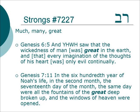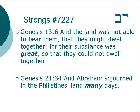Genesis 6:5 — And Yahweh saw that the wickedness of man was great in the earth, and that every imagination of the thoughts of his heart was only evil continually. This was the reason that he's going to bring the flood. Genesis 7:11 — In the six hundredth year of Noah's life, in the second month, the seventeenth day of the month, the same day were all the foundations of the great deep broken up, and the windows of heaven were opened. Genesis 13:6 — And the land was not able to bear them, that they might dwell together, for their substance was great, so that they could not dwell together.